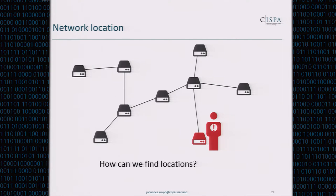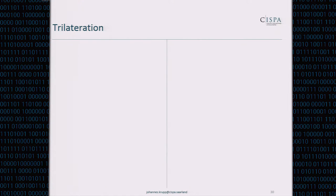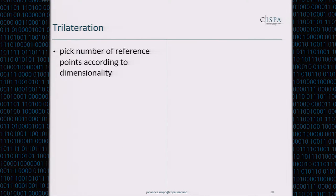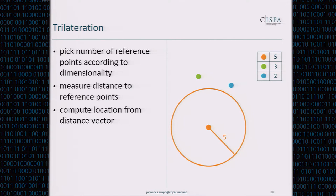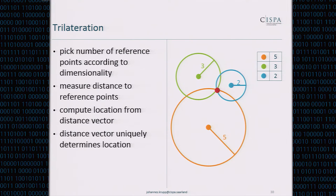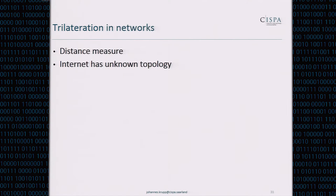If we could find the location of the scanner and the location of the attacker, we could compare them — if they're the same, they're very likely the same person. This is similar to trilateration used in GPS. You pick a number of reference points according to the dimensionality of your space, measure your distance to all reference points, then compute the location from the distance vector by intersecting spheres of appropriate radii. The key feature is that the distance vector uniquely determines a location: if the distance vector is the same, the location was the same.